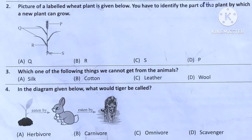Letter R is stem — it helps the plant to support itself. Letter S is root — it absorbs water from soil for the plant. So the answer is Option D.